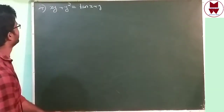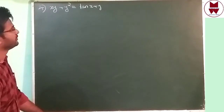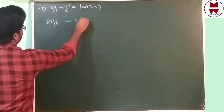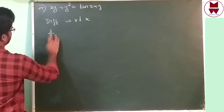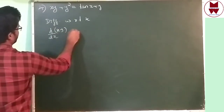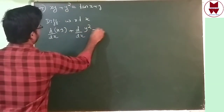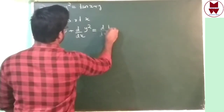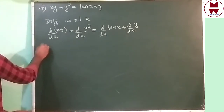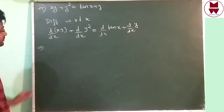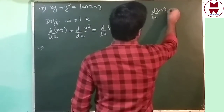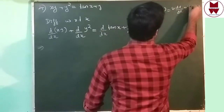Now, question number 4 is: xy + y² = tan x + y. We have to differentiate. Differentiate with respect to x. We can write d/dx of xy plus d/dx of y² equals d/dx of tan x plus d/dx of y. For d/dx of xy, we have to use the product rule. What is the product rule? d/dx of uv = u dv/dx + v du/dx.